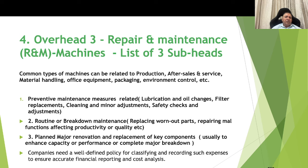Overhead number 3: repair and maintenance of machines — three subheads. Machines can be production, after-sales service, material handling, office equipment, packaging, or environmental control machines depending on the type of industry. The three subheads are: subhead 1, preventive maintenance related expenses such as changes of lubricating oils, filter replacement, cleaning, and safety checks; subhead 2, routine or breakdown maintenance including replacement of worn-out parts and repairing malfunctioning parts; and subhead 3, major renovations and replacement of key components to enhance capacity or performance or address major breakdowns. Companies need a well-defined policy for classifying and recording such expenses to ensure accurate financial reporting.